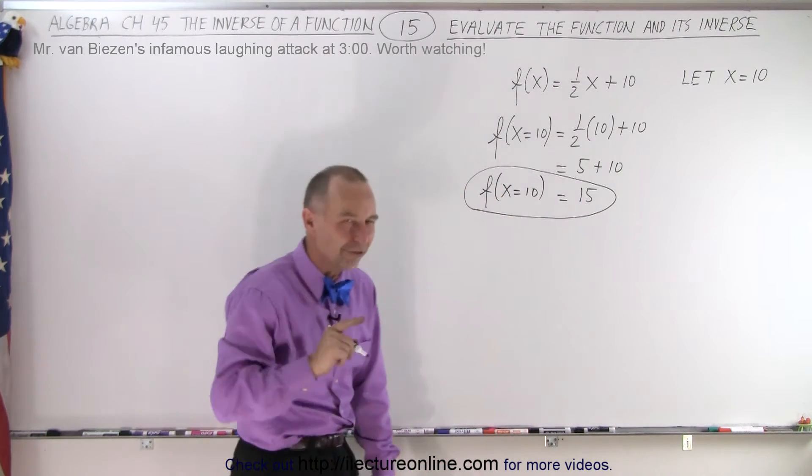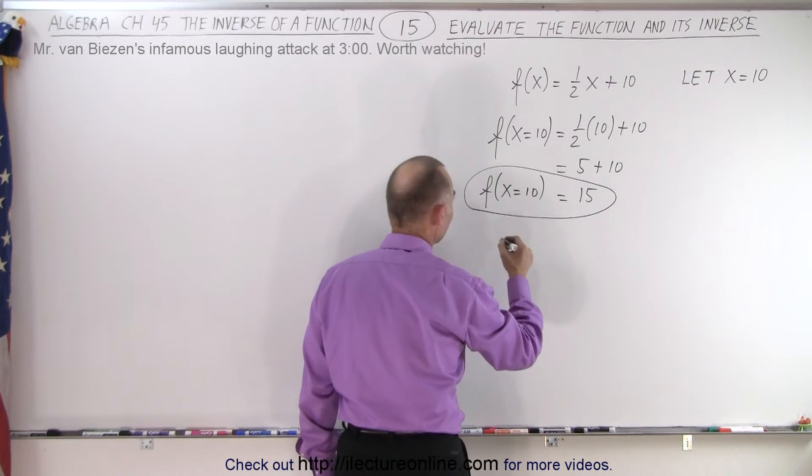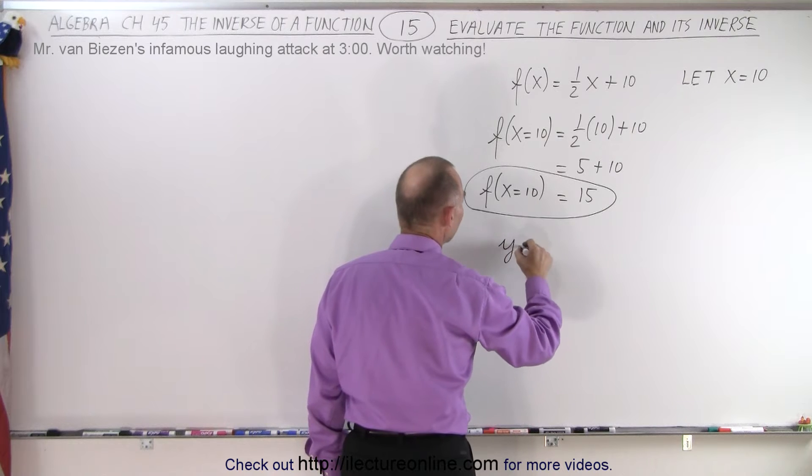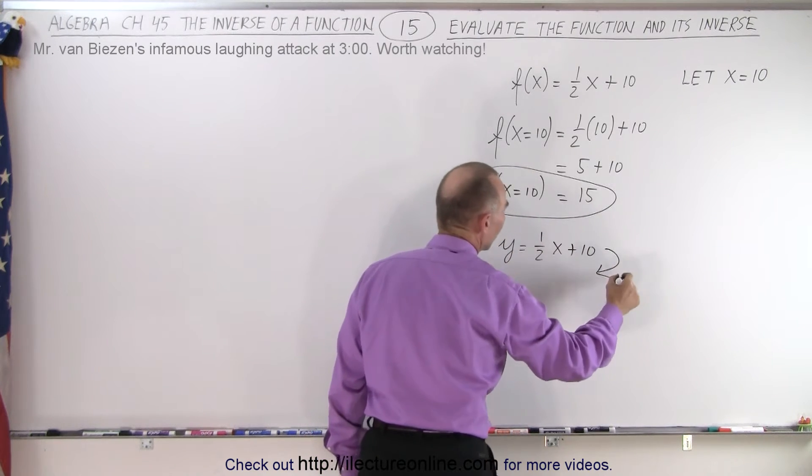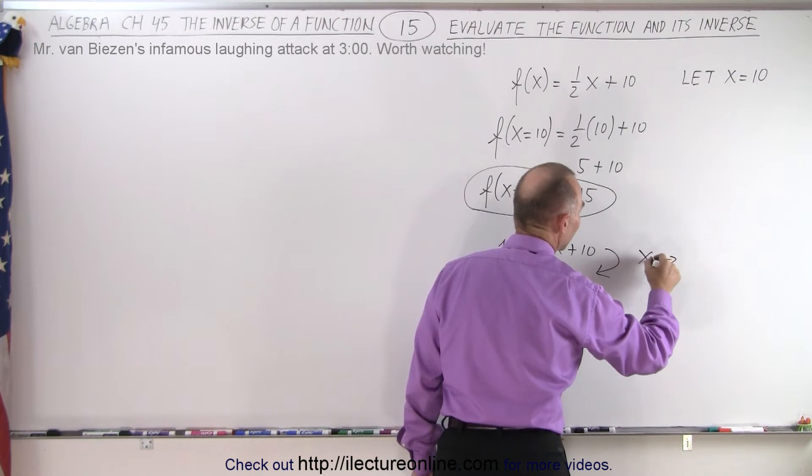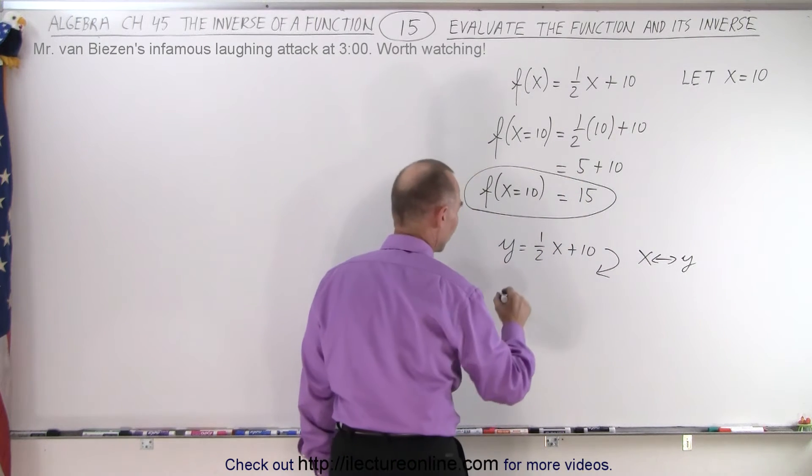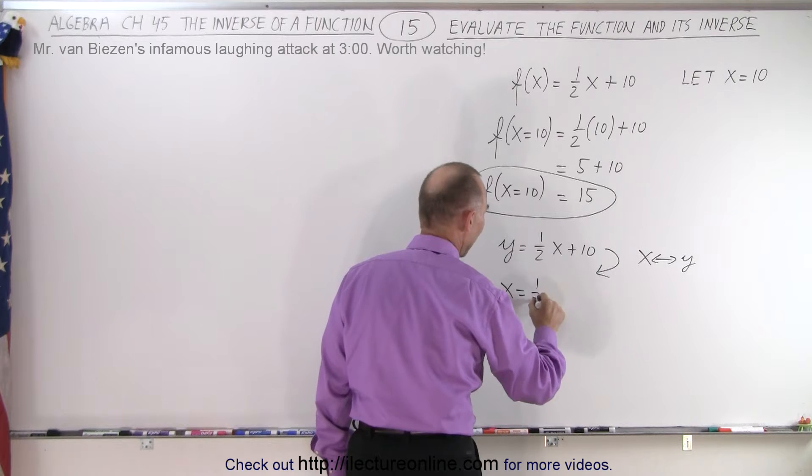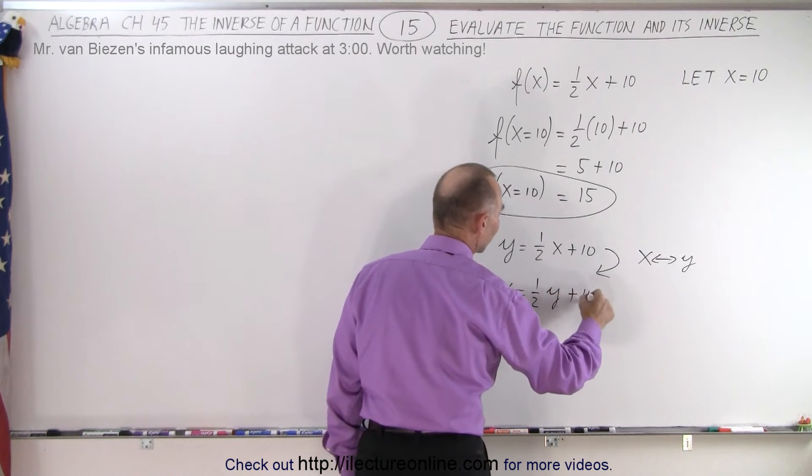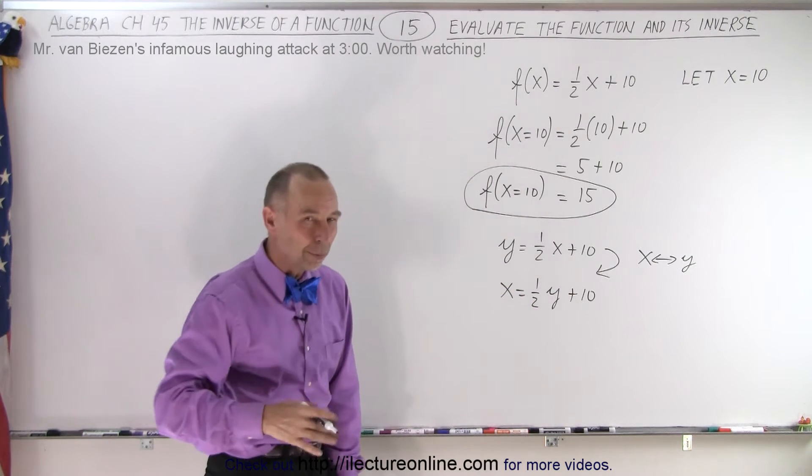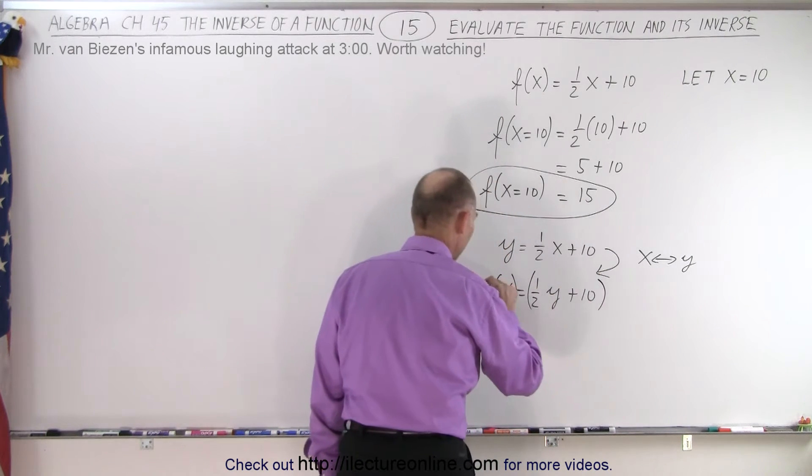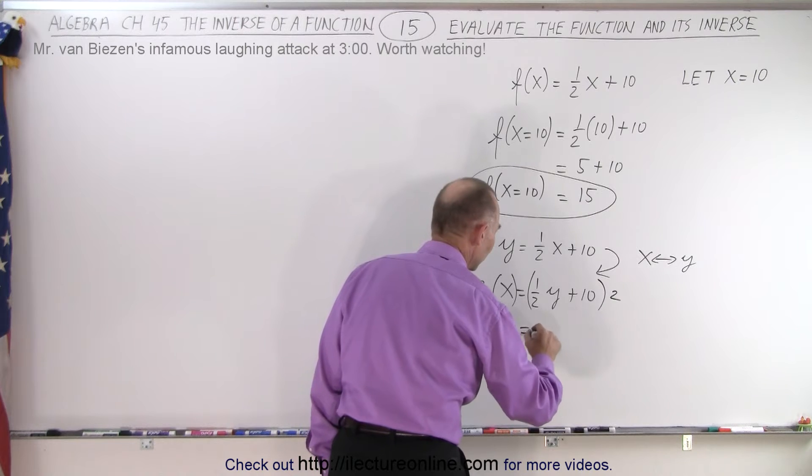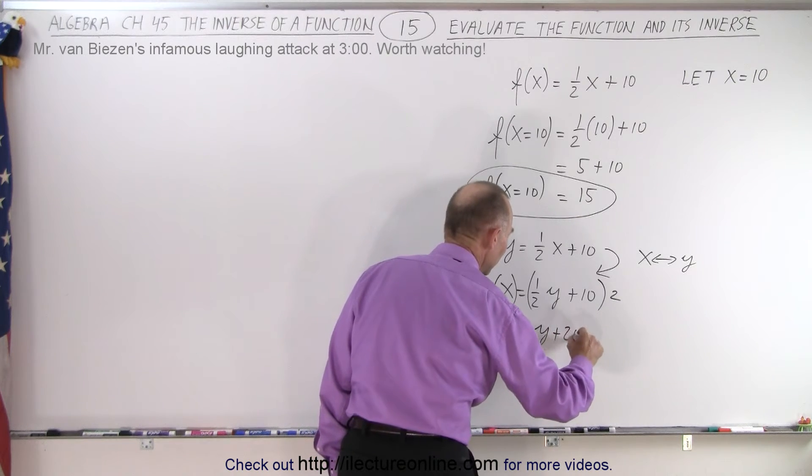Now we find the inverse of that function. To find the inverse, we write y equals 1 half x plus 10, and then we're going to exchange every x for y and every y for x. So we end up with x equals 1 half y plus 10. To solve for y, we're going to multiply both sides by 2, so multiply the left and the right side by 2, which means we get 2x is equal to y plus 20.